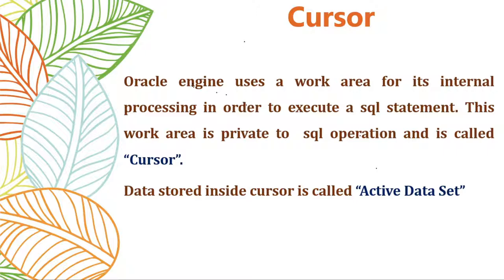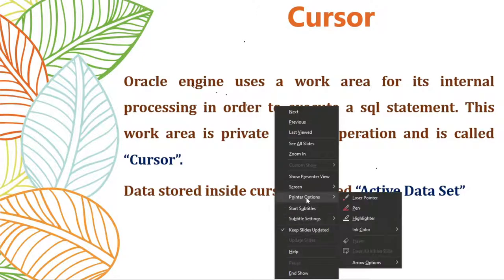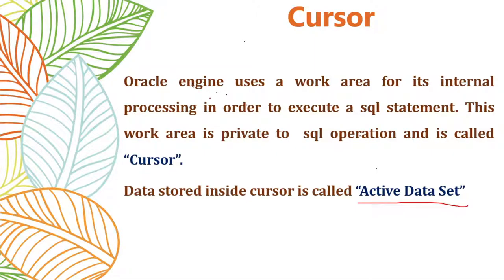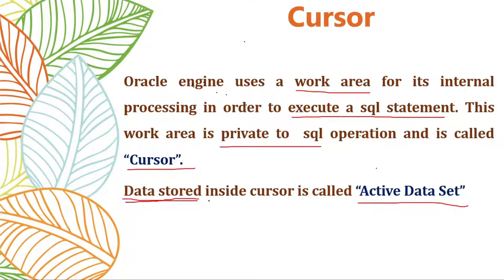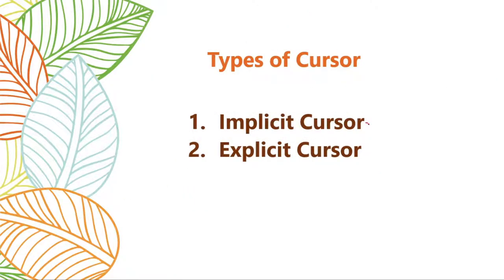When you try to run any SQL statement, data is collected from the database and stored inside the cursor, and that data is called the active dataset. Whatever data you are going to store inside the cursor is called the active dataset. So a cursor is a work area for executing SQL statements, and this work area is private to SQL operation. Whatever data is stored inside the cursor is called the active dataset — it is a buffer area used by Oracle engine to process SQL statements.